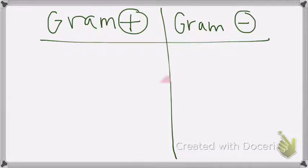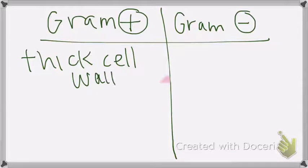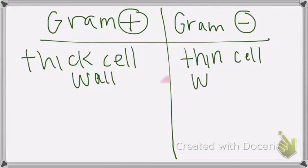Okay, remember gram positive has a thick peptidoglycan, thick cell wall. You know this. Gram negative has a thin cell wall. And it has an outer membrane.